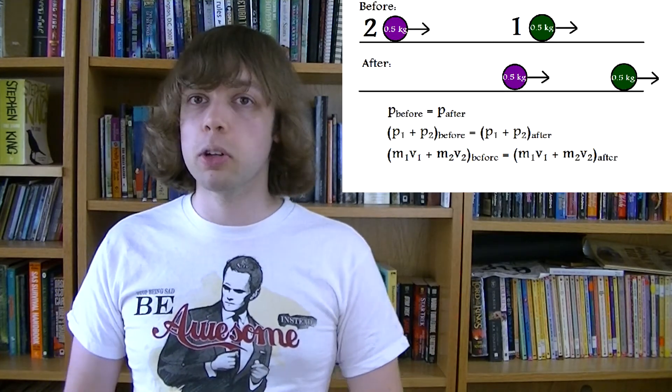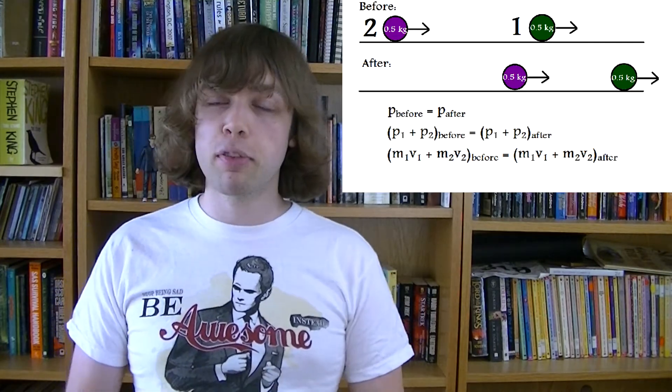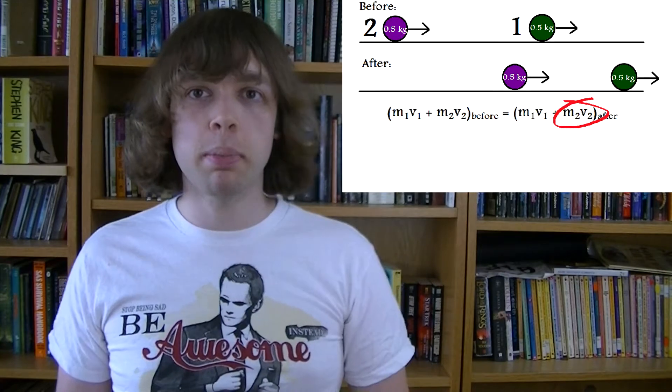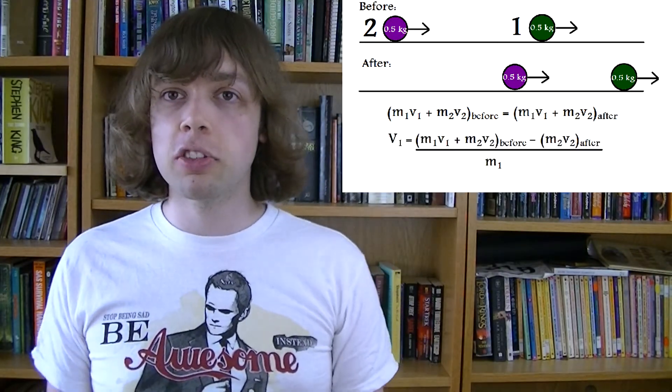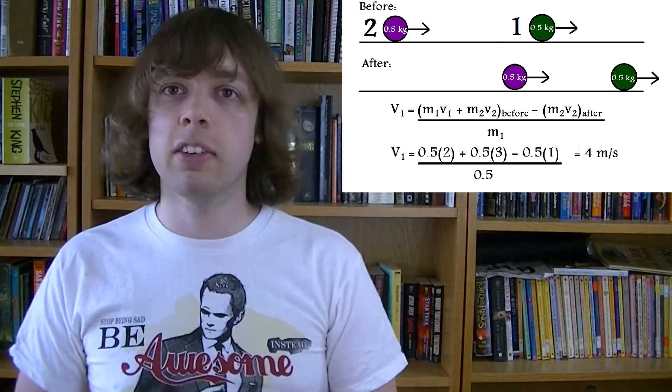We can do some algebra, plug some numbers in, and solve. If you prefer to plug numbers in first, that's fine, I prefer to do the algebra first. So the first thing we do is take this m2v2 away from both sides, then we'll divide both sides by the mass of ball 1. That makes the velocity of ball 1 the subject of the equation. Plug our numbers into the equation, type it in the calculator, and this is what we get.